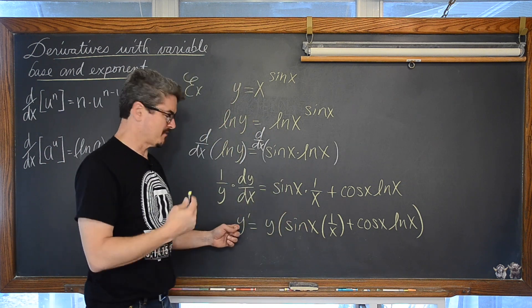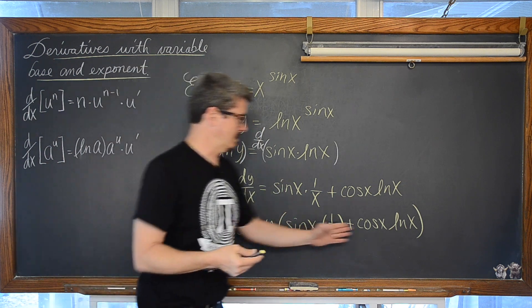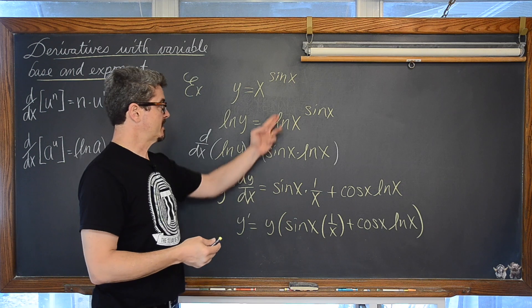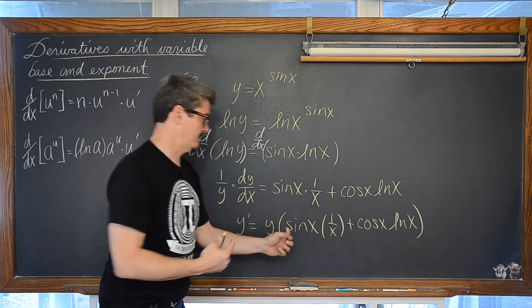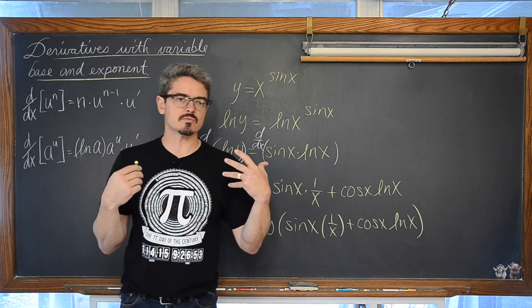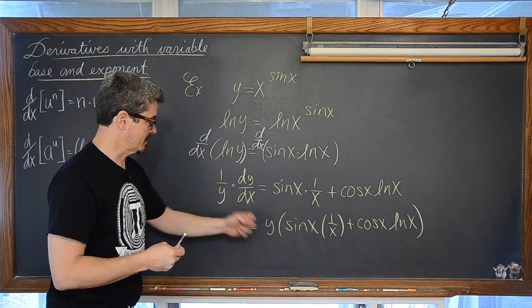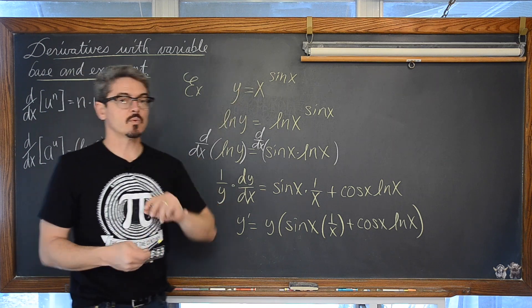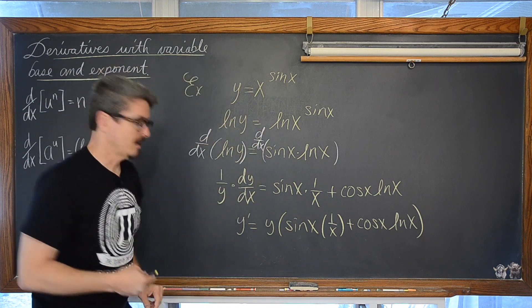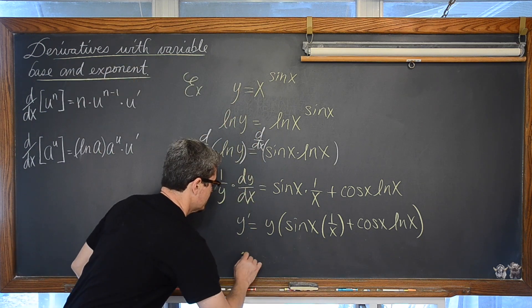But we don't really want a first derivative that has that original independent variable of x and also have it be in terms of y. That would be like writing the second derivative with the first derivative notation still in our answer. So we are going to take y out and replace it with what it is equal to which of course is x raised to the sine of x power.